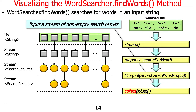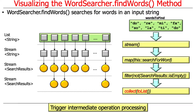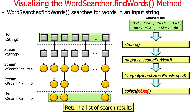The final thing we do is take the stream of non-empty search results and collect it. A couple of things happen here. First, collect will trigger intermediate operation processing — none of the previous operations actually do anything until collect is hit, because stream evaluation is lazy. We'll talk more about laziness later. Second, collect returns a list of non-empty search results. So we started out with a list of words, did transformations through the stream, and end up with a list of search results.